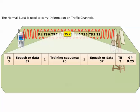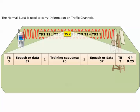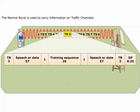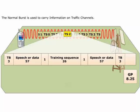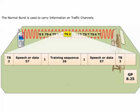A time slot has room for 156.25 bits, but the burst contains only 148 bits. The remaining 8.25 bits is empty and is called the guard period. The guard period is used to protect bursts from overlapping on each other.